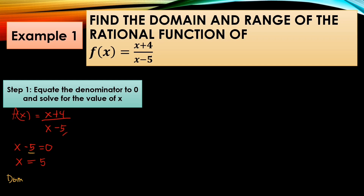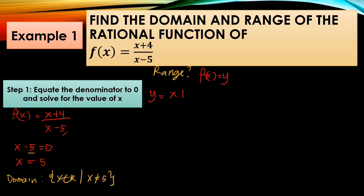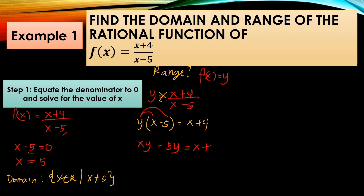So the domain of the rational function is all real numbers except x is not equal to 5. To get the range, assign f(x) to y. So y = (x + 4) over (x − 5). Apply cross multiplication: y(x − 5) = x + 4. Multiply: xy − 5y = x + 4.